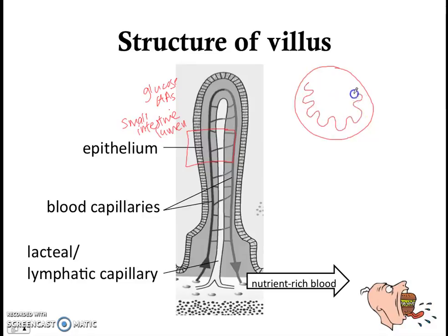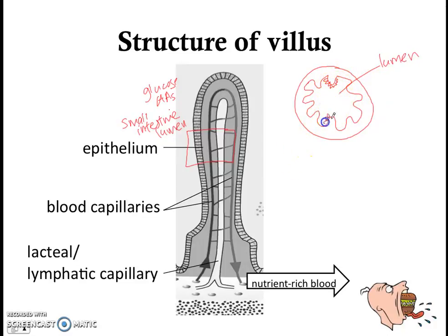If this is my small intestine — I draw a tube — and inside is very folded, and on the folds there are many villi. This space here is called the lumen of the small intestine. It's like where all your digested nutrients flow through. The outside of the villus is the lumen of the small intestine.